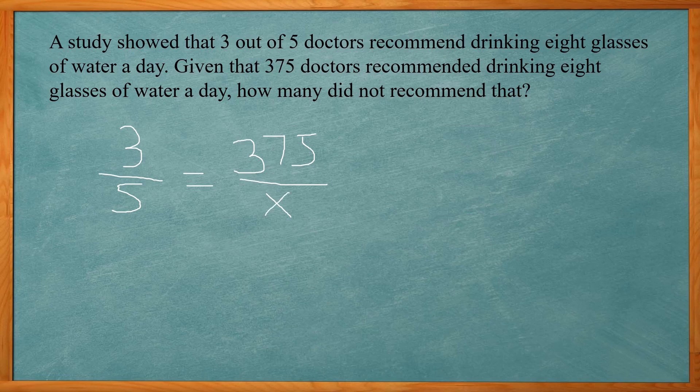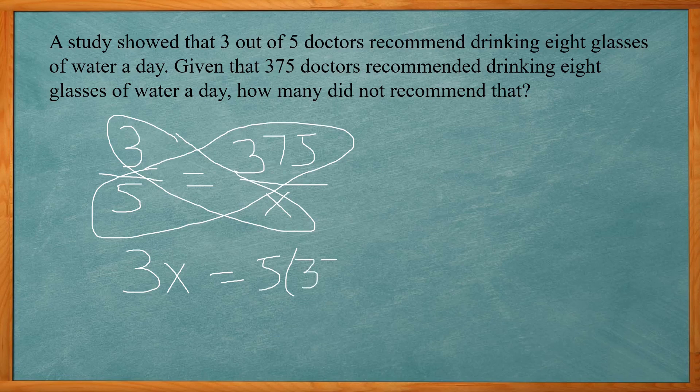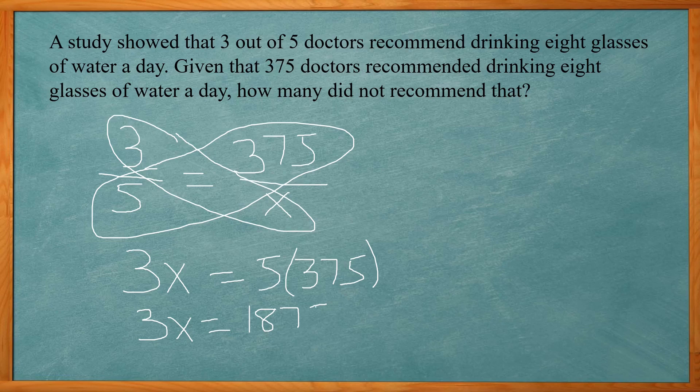So once we set up that proportion we can do the cross multiplication. We're going to have 3 times x or 3x equals 5 times 375, so that gives us 3x equals 1875.